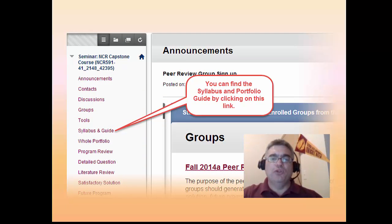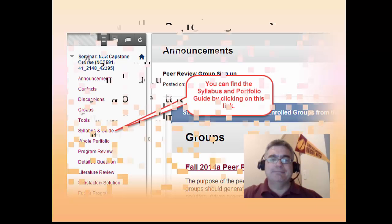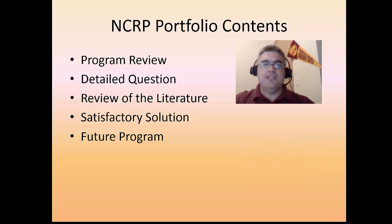The syllabus and portfolio guide contain everything you need to create your portfolio. All of my lectures follow the instructions in the portfolio guide. Grading rubrics are provided for each chapter of the portfolio, and you must meet the grading rubric criteria to receive full credit. This shall be a standalone culminating experience involving an extensive written program review of the highlights you learned in each of the required courses, plus at least one elective course representing your particular interest in the field.